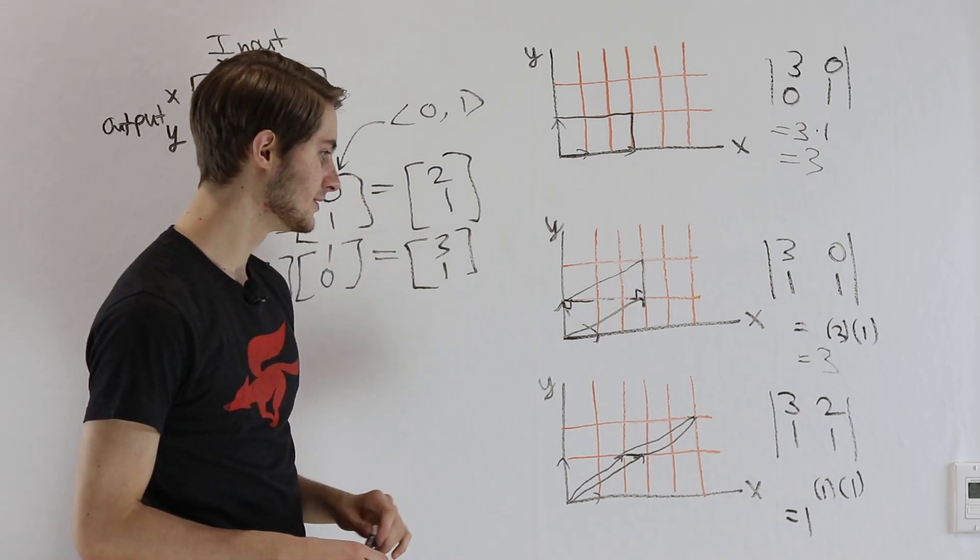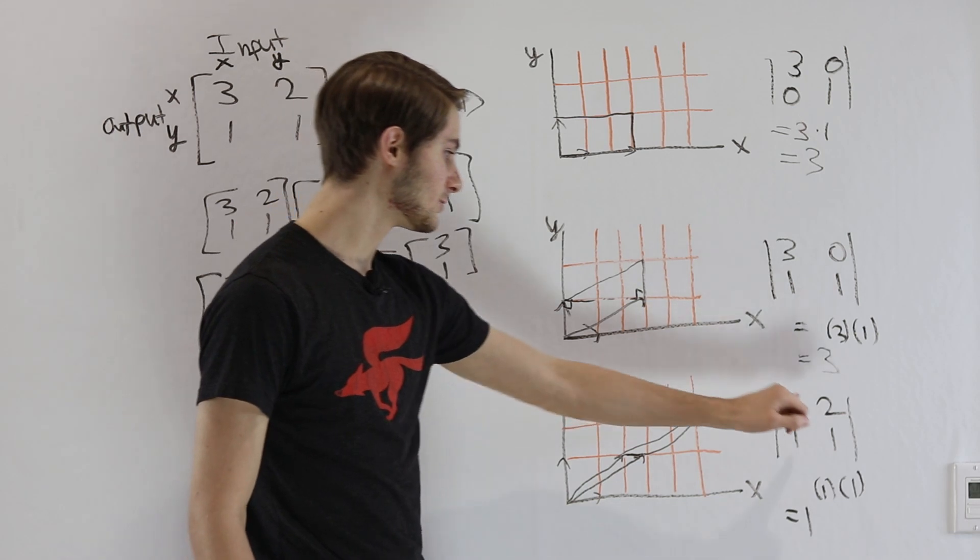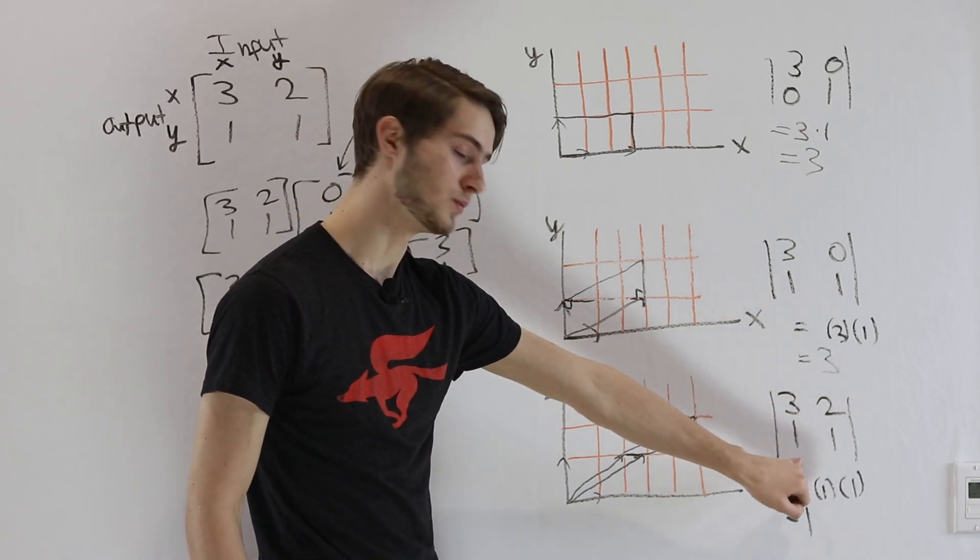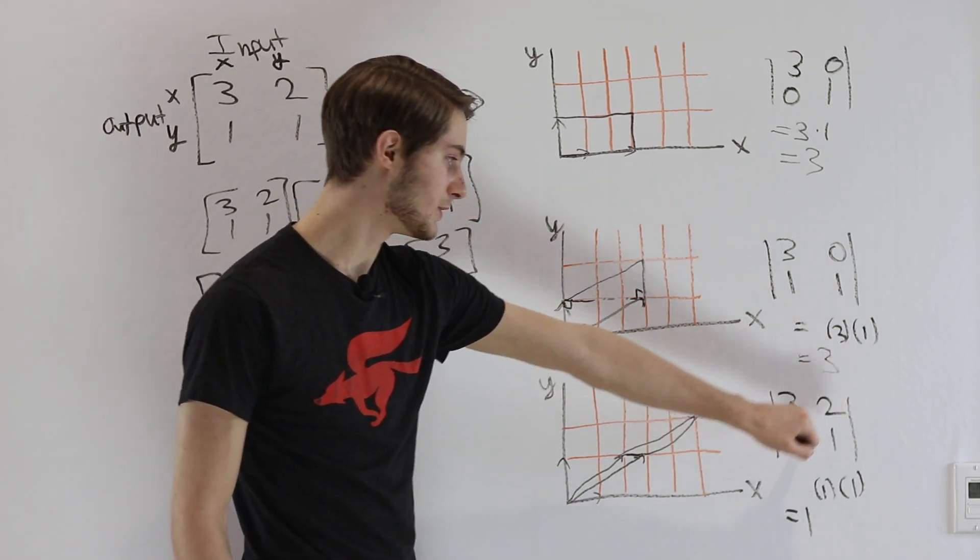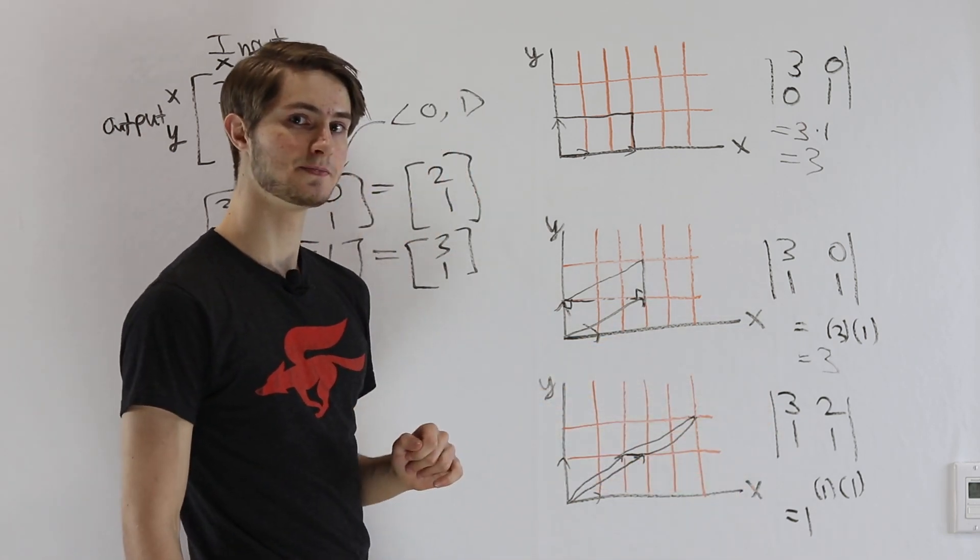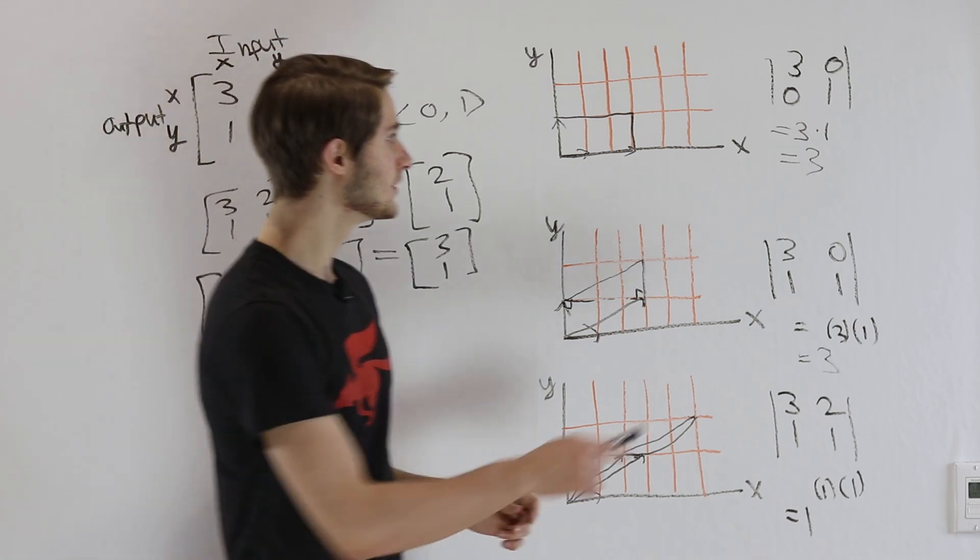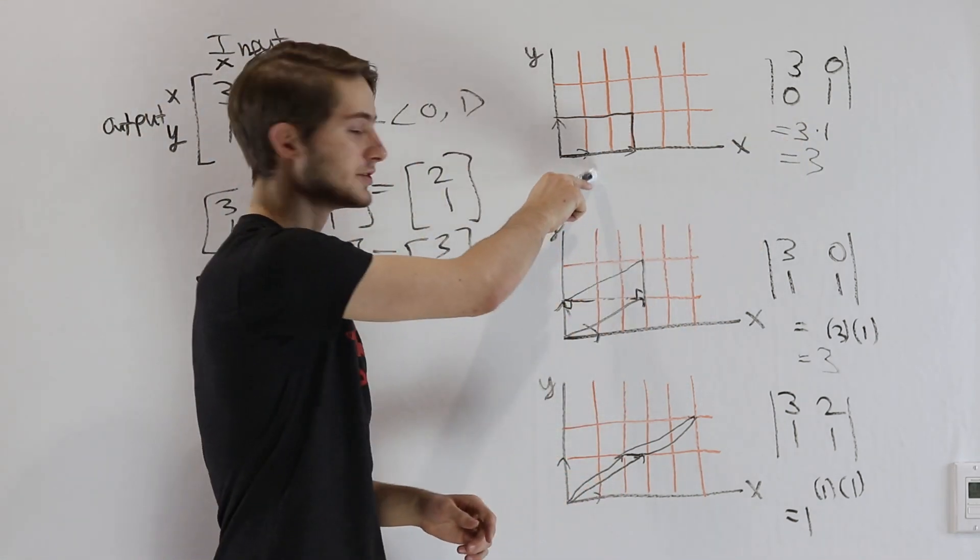And that's the reason this determinant got smaller. How much smaller did it get? Well, it got smaller by 2, and 2 is equal to 2 times 1. These two components multiplied together is how much smaller our determinant gets.